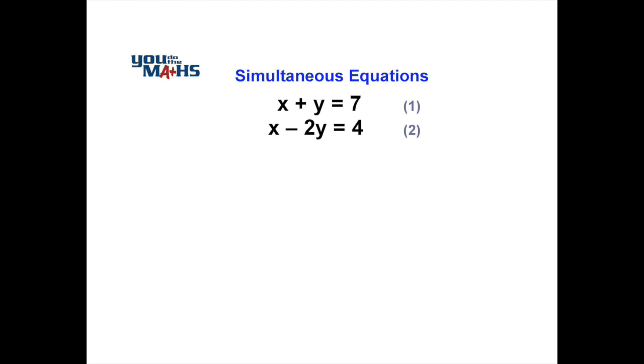Now, if no number exists, like in the case of each of the x's, that number is actually a 1. So we've got the same number in front of the x's, and we've got a 1 and a negative 2 in front of the y's.